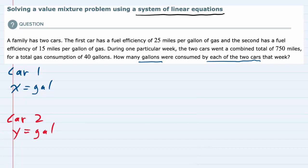Looking back at what was stated in the problem, the total gas consumption is 40 gallons. That means if we take the amount of gas that Car 1 used, x, and add the amount of gas that Car 2 used, y, the total would be 40. So x + y = 40. We have our first linear equation, but we also need a second linear equation in order to have a system of equations.